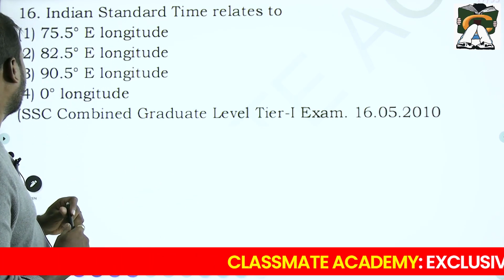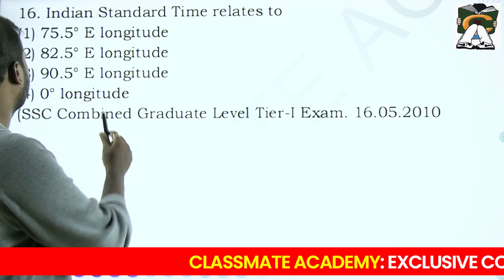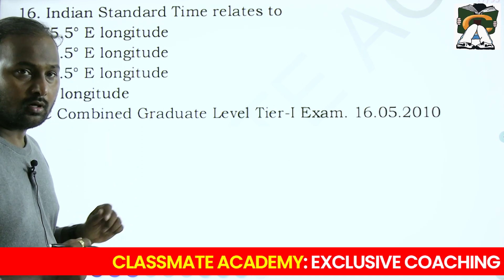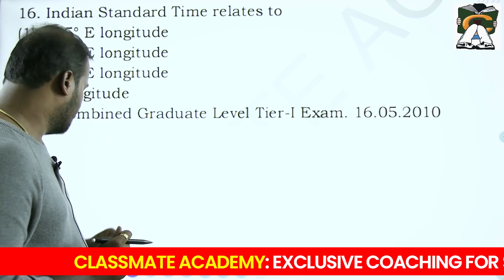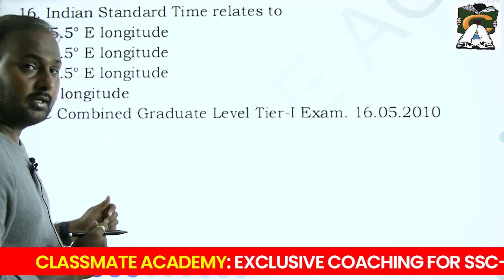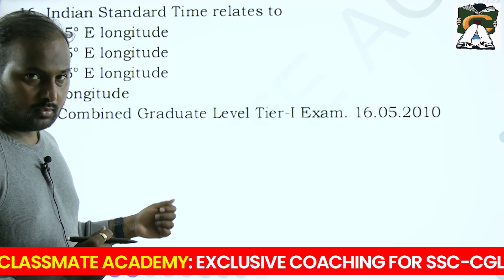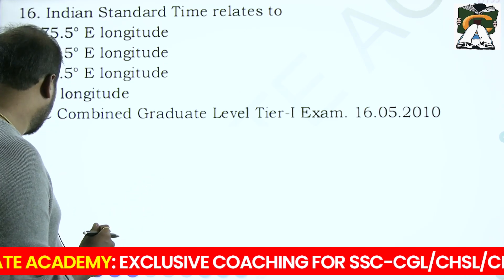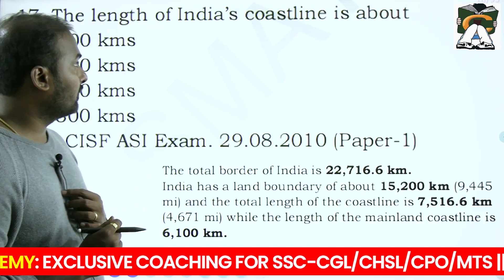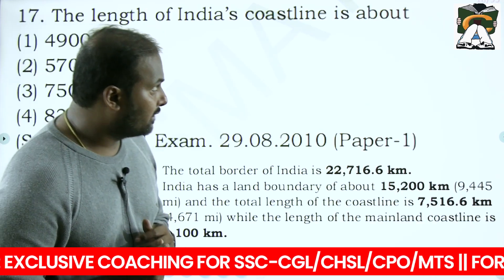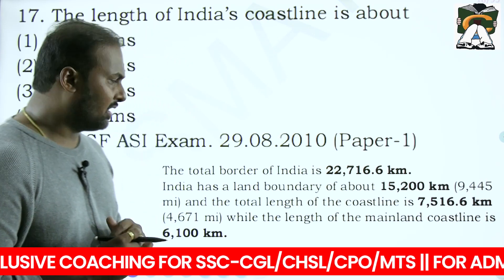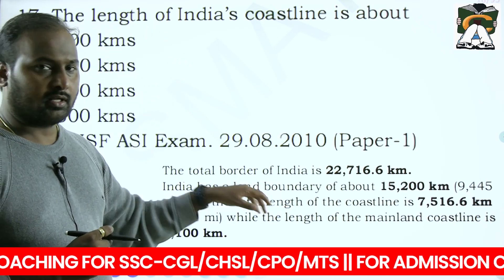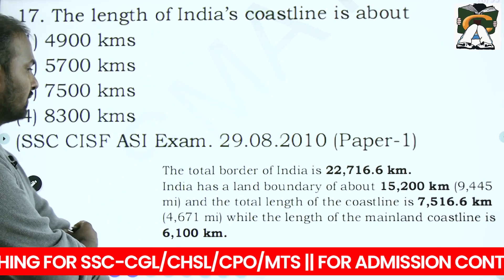Indian Standard Time relates to 82 degrees 30 minutes East longitude - that is the Indian Meridian or IST. The length of India's coastline is about 7,500 km.